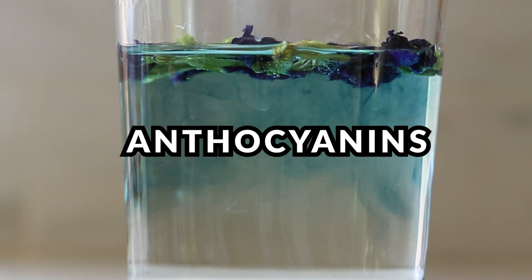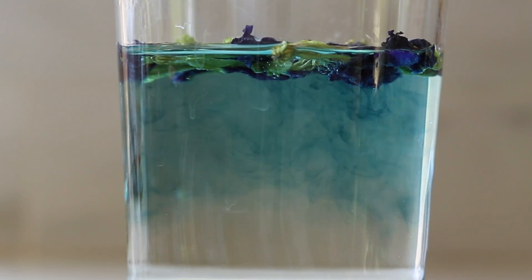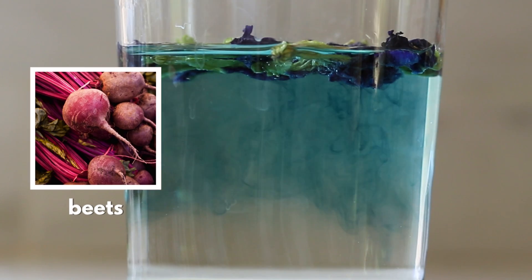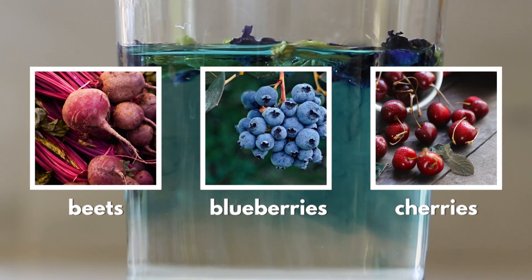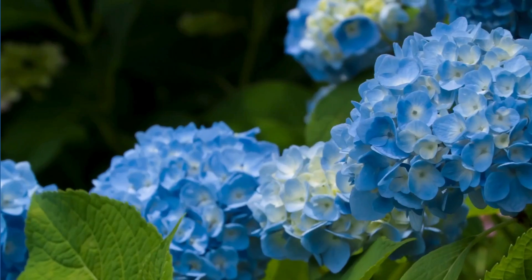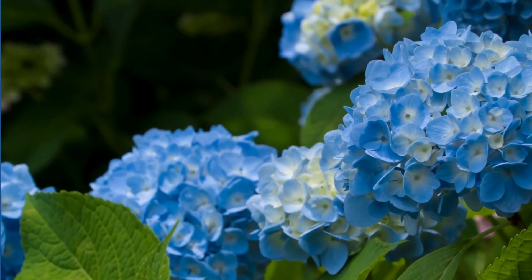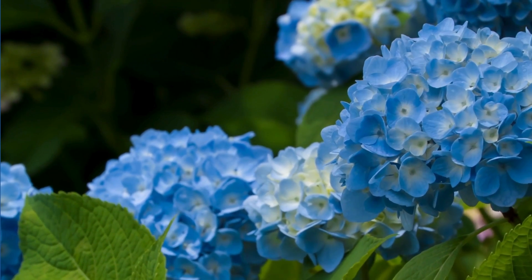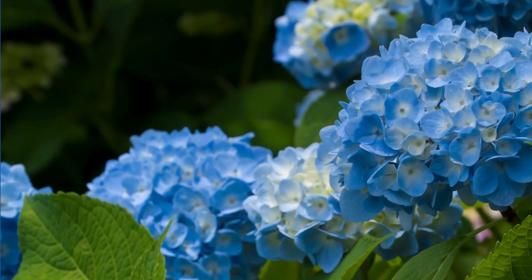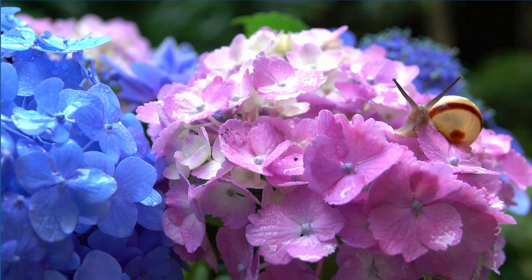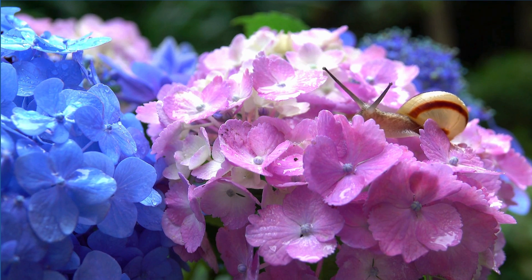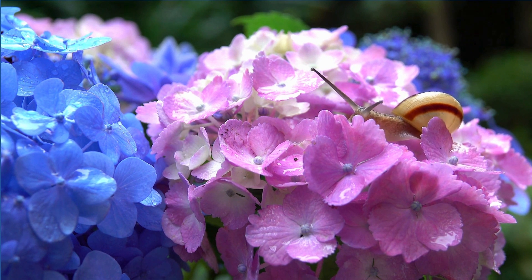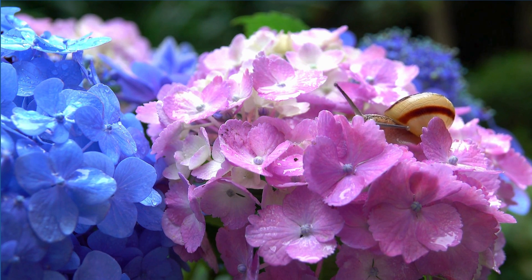Anthocyanins are actually found in a wide variety of plants, like beets, blueberries, cherries, and hydrangea flowers, which are particularly cool because we can actually influence their color by changing the pH of the soil. Blue, purple, and reddish hues are often hints that these molecules are present.